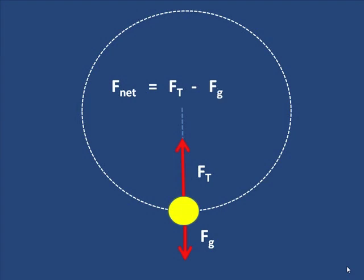As before, we know that the net inward force for something in a circle is mv²/R, and we can write mv²/R equals F_T minus F_g.